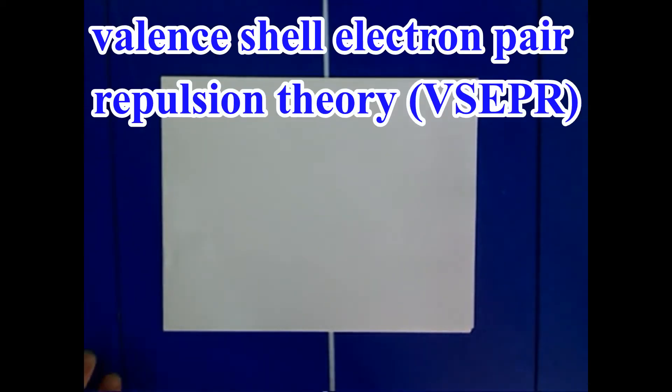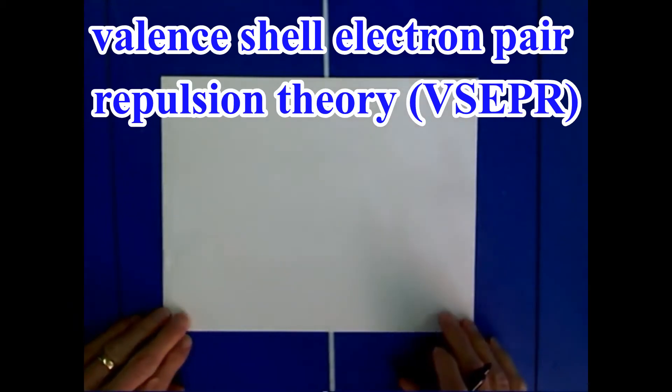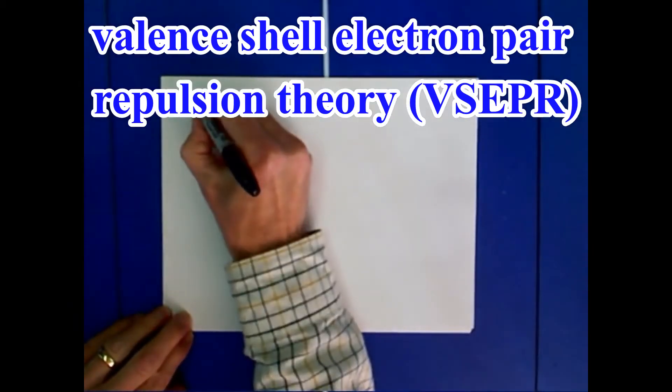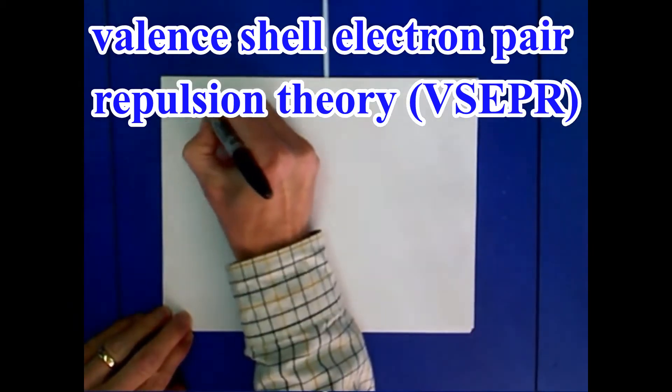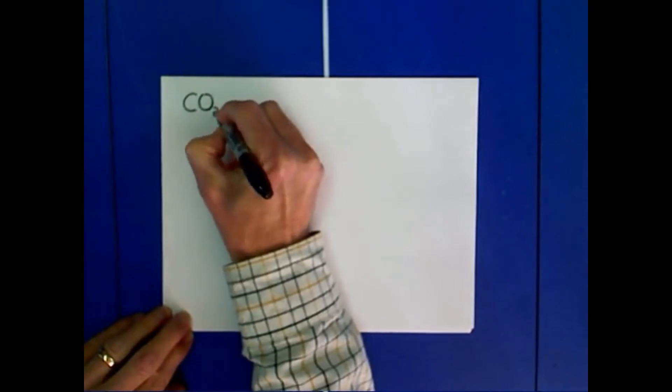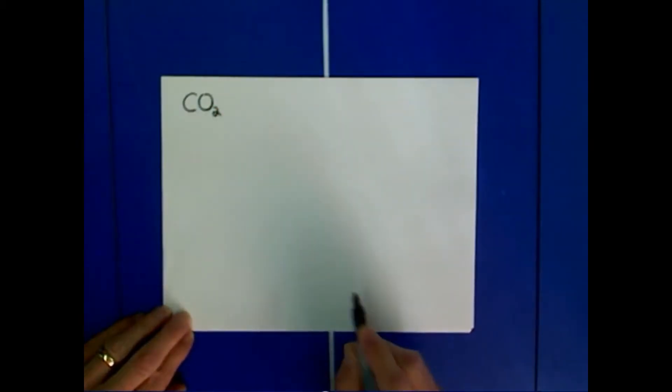We're going to study a couple of cases in valent shell electron pair repulsion theory. The first molecule we're going to look at is carbon dioxide, or CO2.